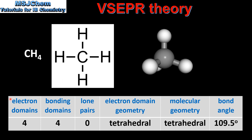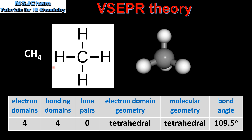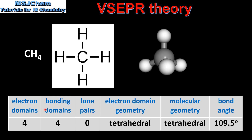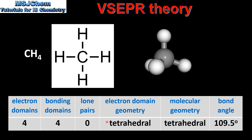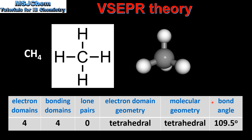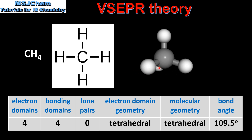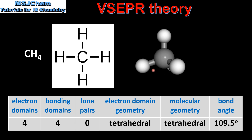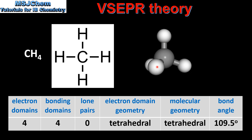We'll start by looking at molecules with 4 electron domains around the central atom. Here we have the Lewis structure for CH4, methane. Methane has 4 bonding domains and 0 lone pairs of electrons. The electron domain geometry is tetrahedral, the molecular geometry is tetrahedral, and the bond angle is 109.5 degrees. Here we have our 3D model of methane — both the electron domain geometry and the molecular geometry are tetrahedral, and the bond angle is 109.5 degrees.